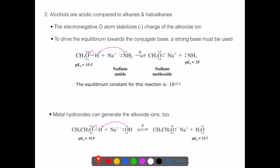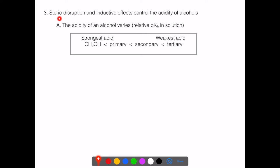If we use a metal hydroxide — sodium hydroxide or calcium hydroxide — we go from a pKa of about 15.9 to 15.7, so the arrows are more equal since the difference in pKa is small. Metal hydroxides also provide alkoxide ions, which can be very useful in SN2 and E2 reactions. The steric part of alcohols and inductive effects really influence the acidity of alcohols.